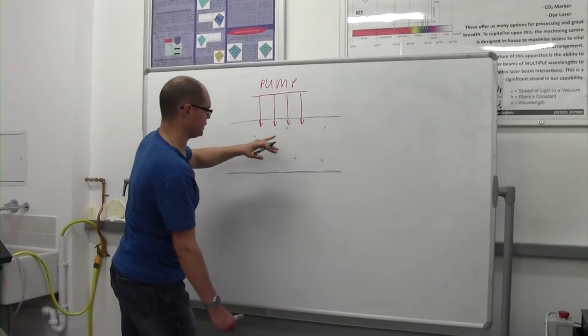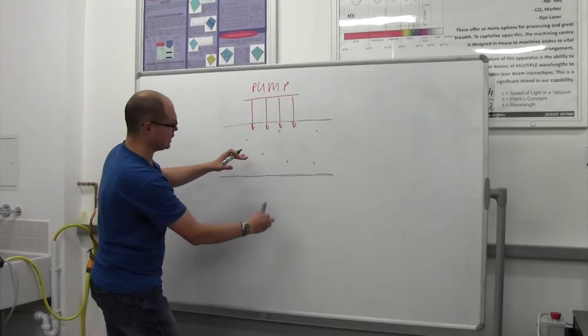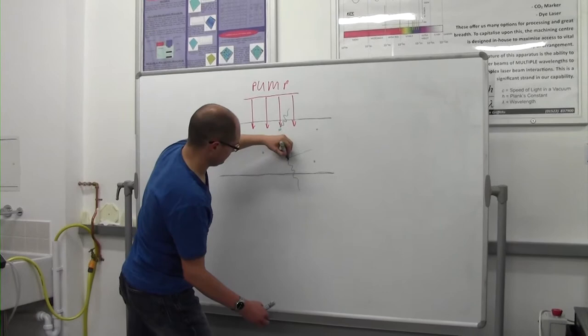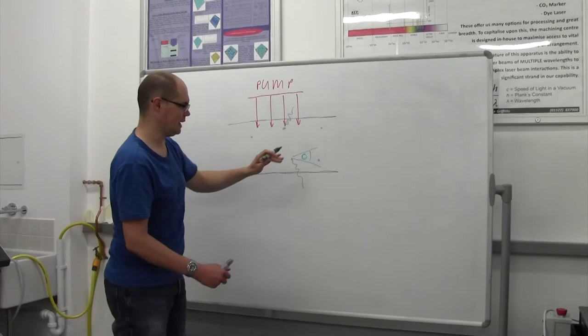Now, of course, there's nothing to tell these molecules here which way they should emit. They could emit like that. They could emit like that. But, of course, statistically speaking, they're definitely going to do something around this angle here. Okay? So, we know that there's a likelihood that that's going to happen. How can we make sure we gather as much of that as possible and try and make it bounce backwards and forwards inside this cavity?